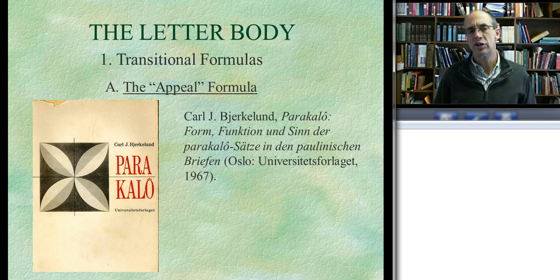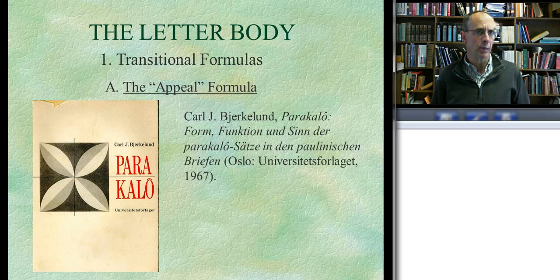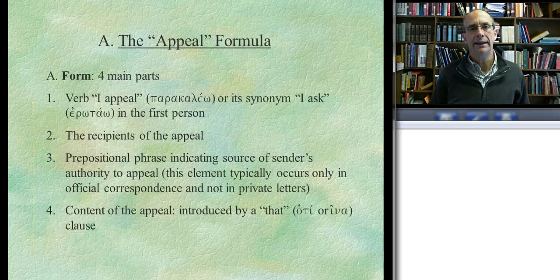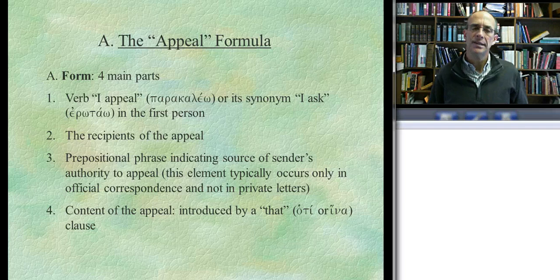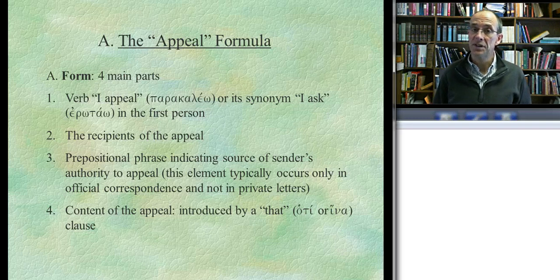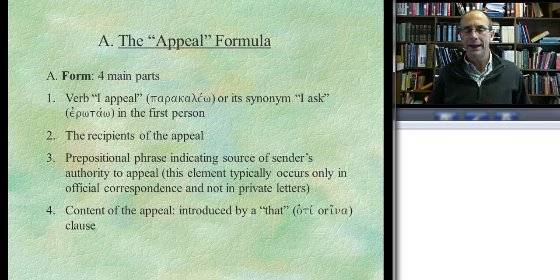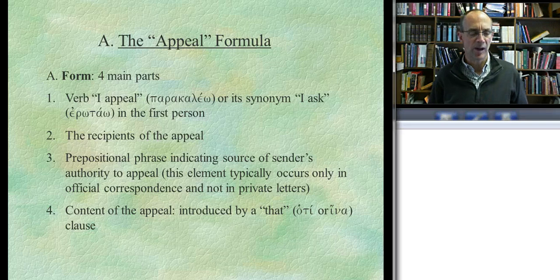The first bunch of conventions we're looking at are all transitional. The first transitional formula is typically called an appeal formula. This was examined by a Scandinavian scholar who looked at secular letters of that day and saw many times this formula centered around the key verb parakaleo, or its synonym eratao. The appeal formula is easier to see in Greek than in English, because English translations use a variety of terms to translate parakaleo—you might have 'I urge you,' 'I implore you,' or 'I beseech you'—but in the original Greek it's always that same key verb.